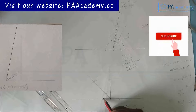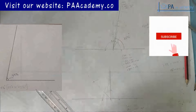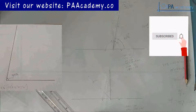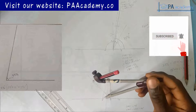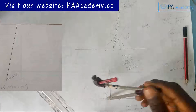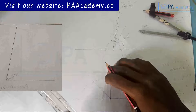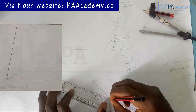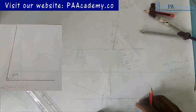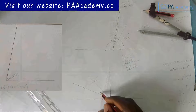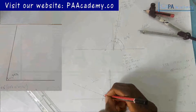Next, bisect angle AOD to get 22.5 degrees. Place your compass on point D and draw an arc; with the same length come to point C and draw another arc. From the point of intersection, draw a line to O — being careful to pick the center of the intersection properly. Call this new point E.